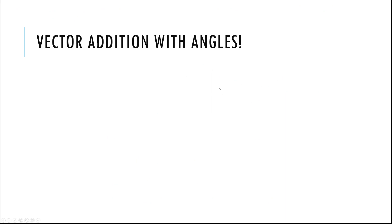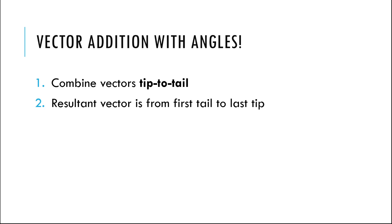Another thing you might see with field vectors is combining them when there are angles involved. The good news is the IB typically won't have you do this with math — it'll just be geometrical or graphical. One good way to do this is combining your vectors tip to tail. The tip is the arrowhead end; the tail is the other end. You sketch your vectors connected front to back, then draw from the very first tail to the very last tip to get the resultant. You could use trig or laws of cosines to find the magnitude, but the IB almost always just asks for the direction.